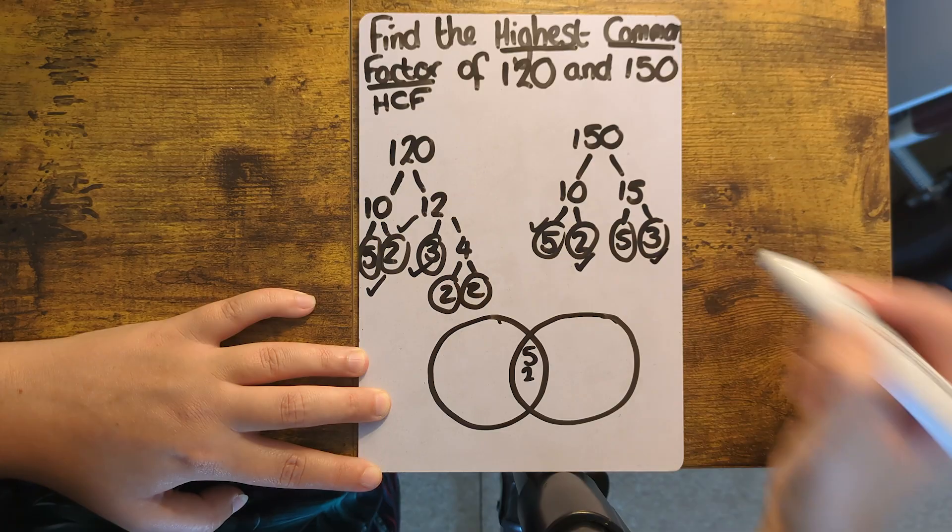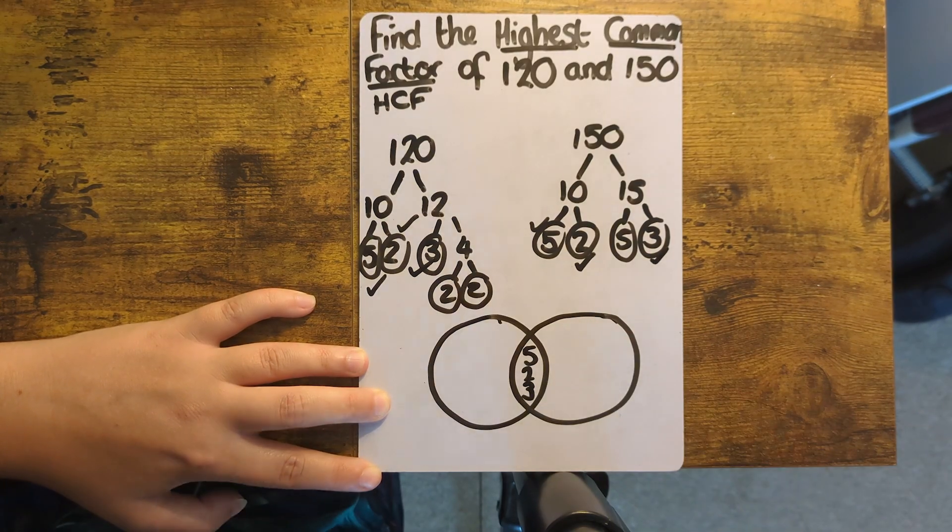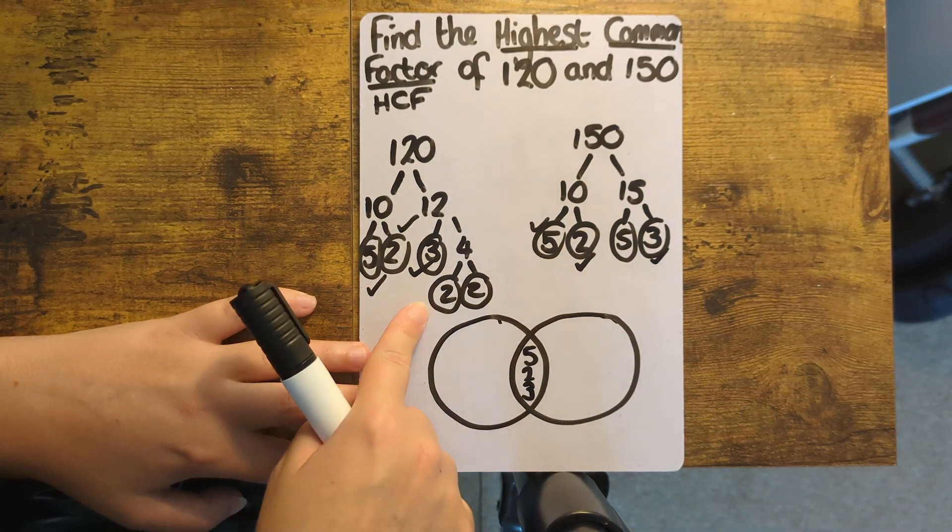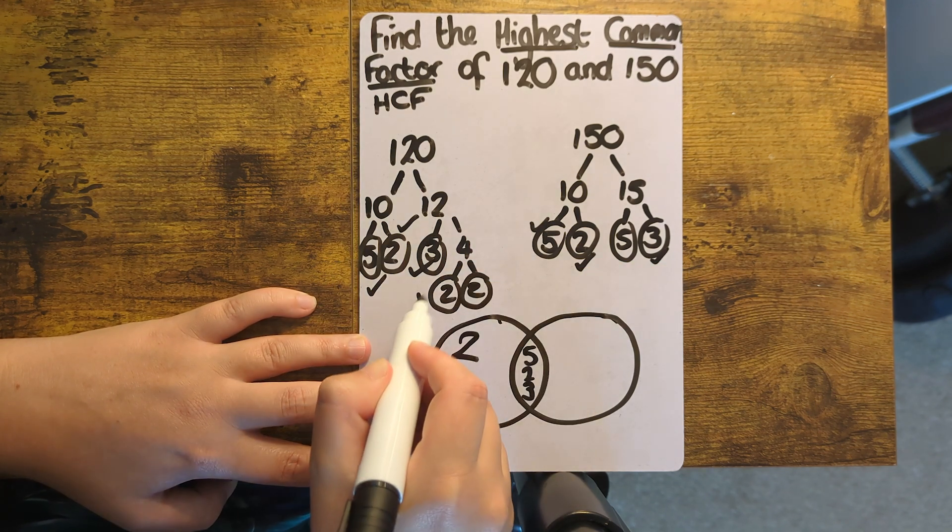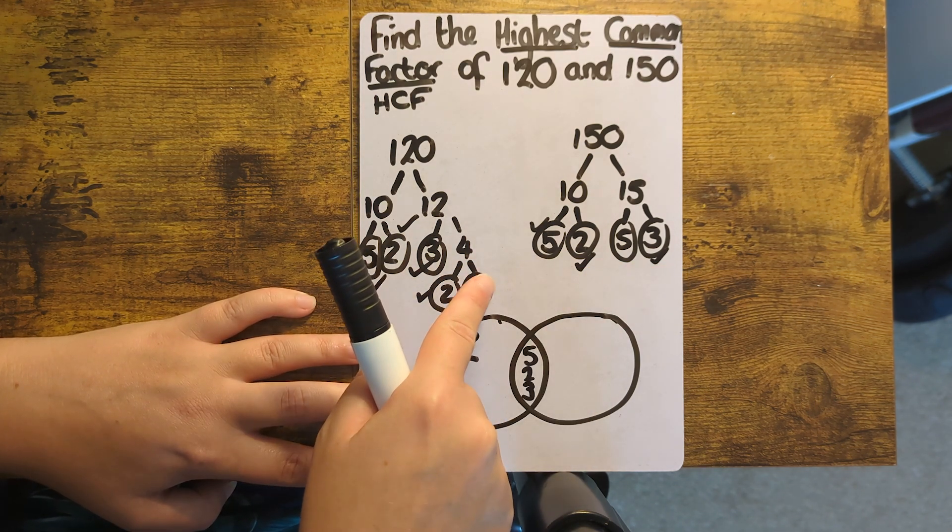Then this three can be paired up with this three, so again, it goes in the middle. For this two, there's no other twos on the 150 tree, so that has to go in the left circle, as does this two.